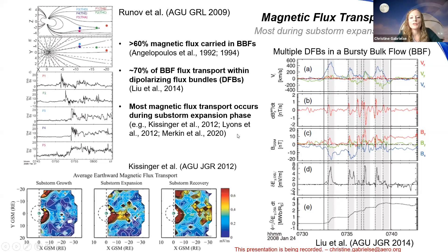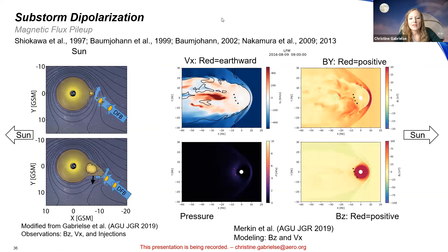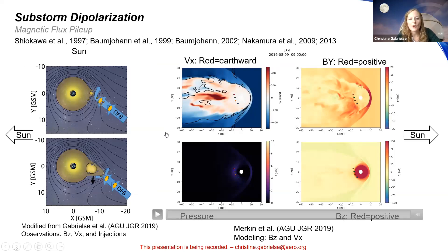Most magnetic flux transport occurs during the substorm expansion phase, as shown in Kissinger et al., with most flux transport occurring after onset. A new paper from Bern et al. — and Joachim may talk more about this next week — showed that the total flux transported by about seven separate dipolarization fronts can account for the total magnetic flux that needs to be transported throughout the substorm. Similarly, multiple mesoscale dipolarizing flux bundles can bring in the required flux.